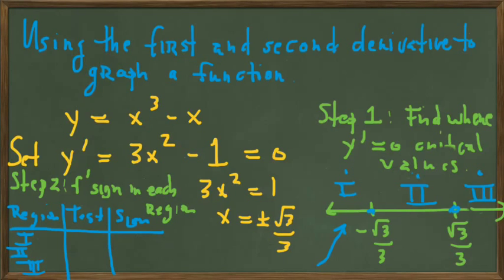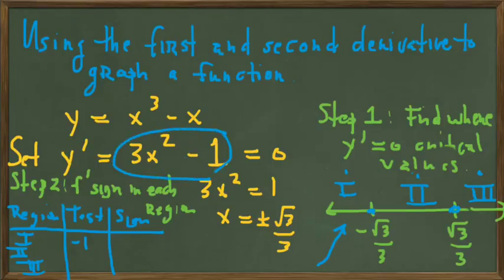To determine the signs in each of these regions, all we have to do is plug in any value we want in each region. In region 1, the square root of 3 is about 1.7, and when we divide by 3 we get about 0.6. So we pick x equals minus 1 as our test value. When we plug minus 1 into the derivative, it makes this term positive 3, and this term is always minus 1, giving us a derivative of positive sign.